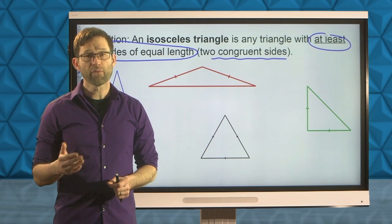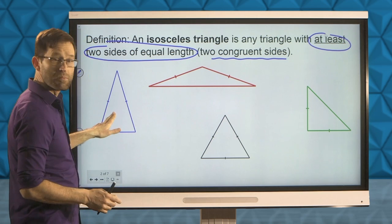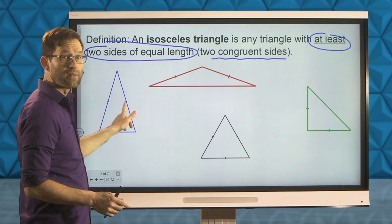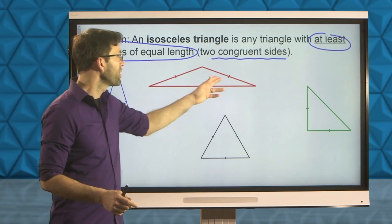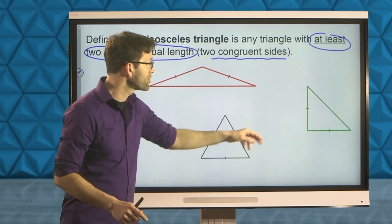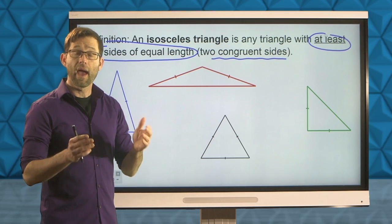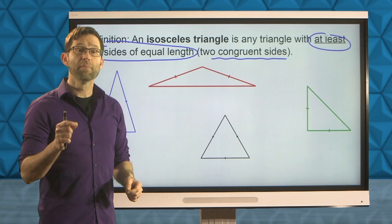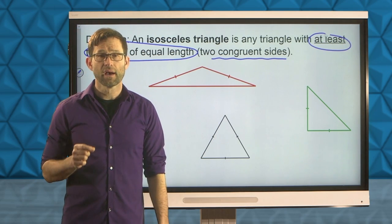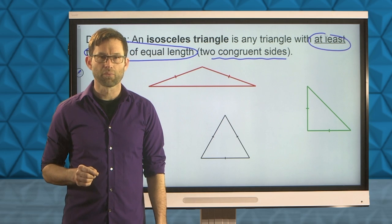It's kind of like how every square is a rectangle. We have a variety of different isosceles triangles: the most basic where two sides are equal length — we use small markings on the sides to indicate they're the same length. We could have an obtuse isosceles triangle, an isosceles right triangle where the two legs have the same length, and finally the classic equilateral triangle, which is also technically isosceles because it has at least two sides of equal length.